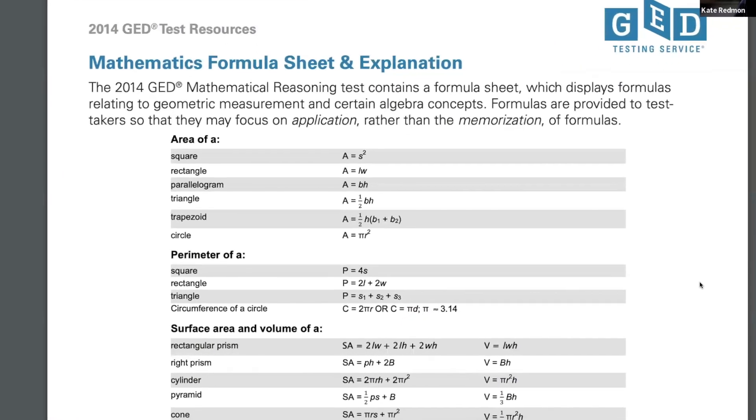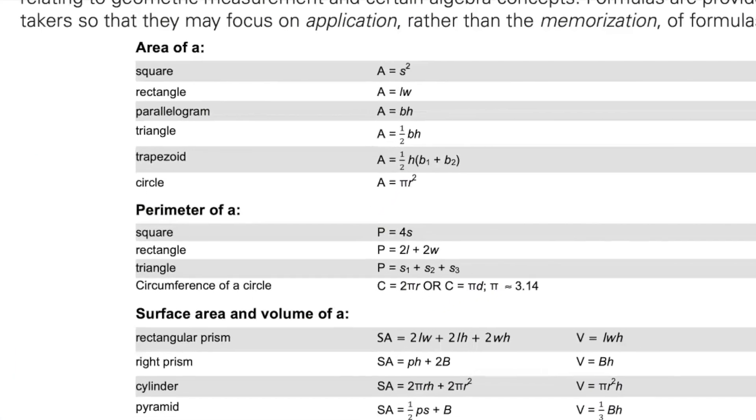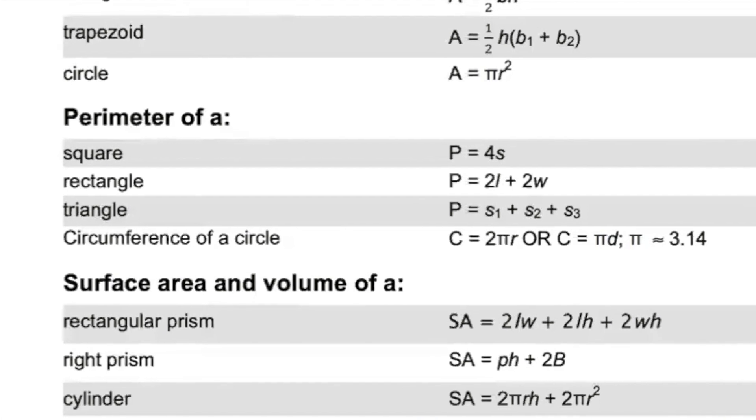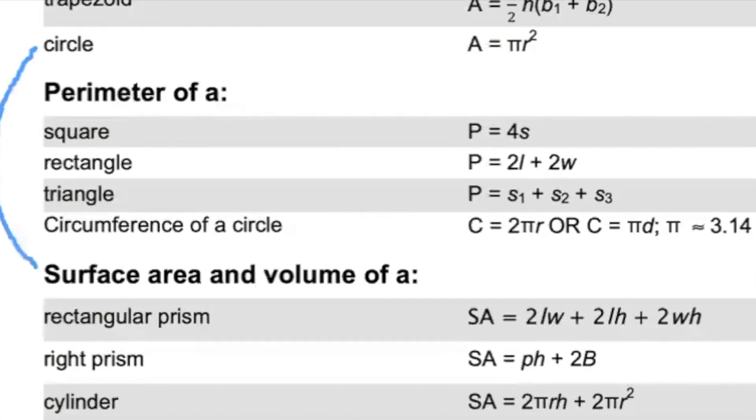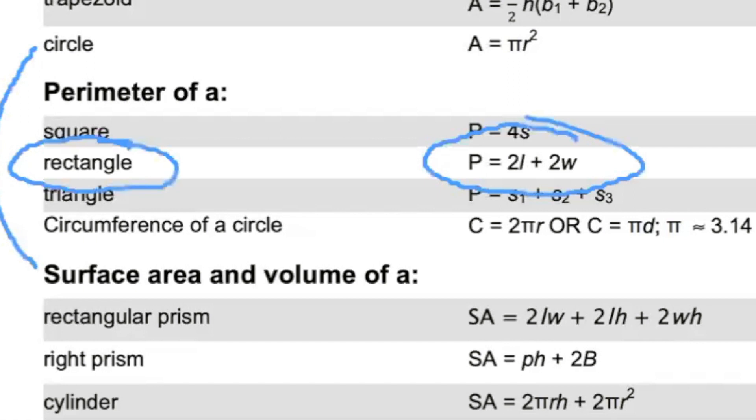So here's the sheet itself and you're going to see that perimeter is the second section down here. Perimeter of a, and what were we talking about? We were talking about rectangles. So we want the perimeter of a rectangle formula and that does not say P equals 21 guys. That says P equals 2L plus 2W.